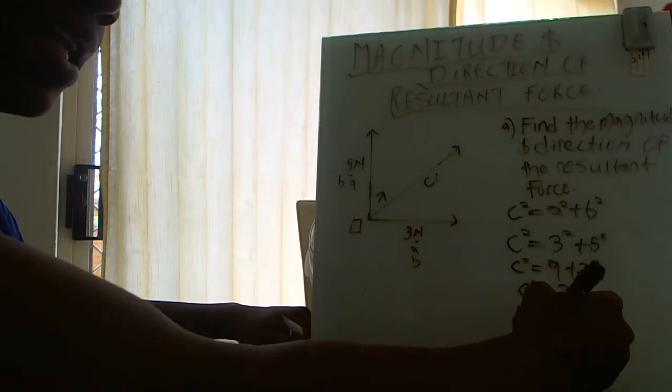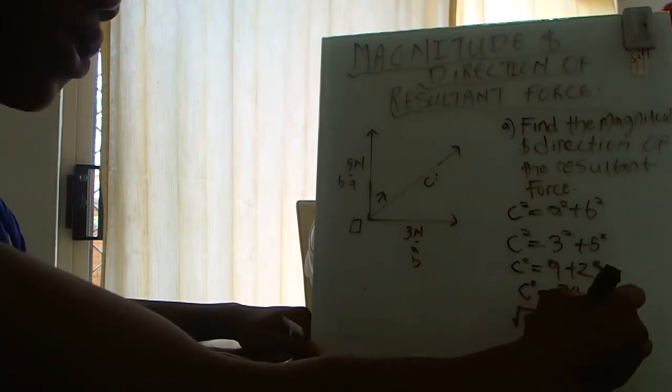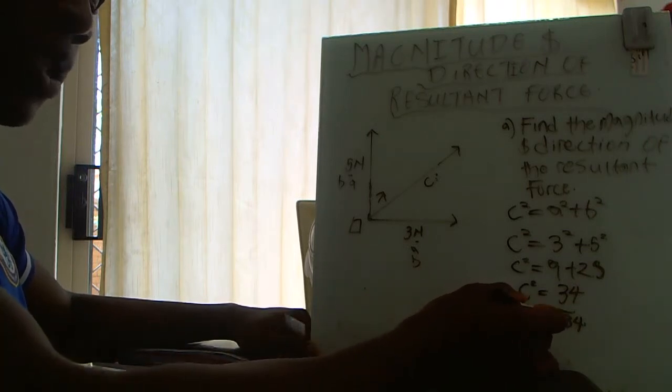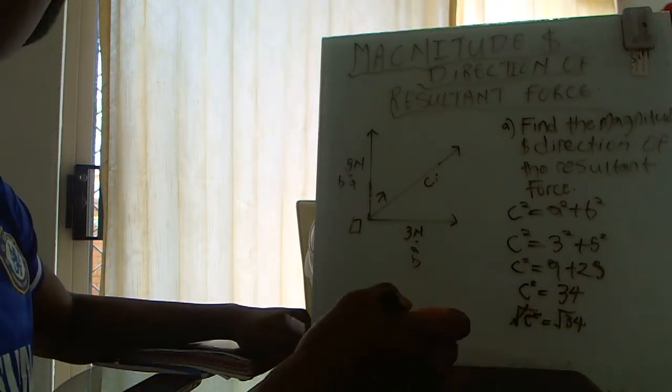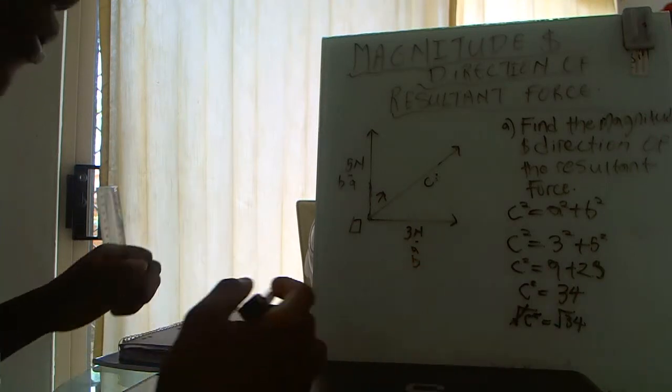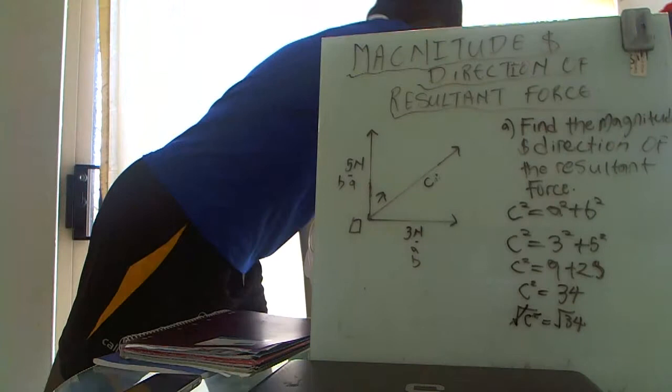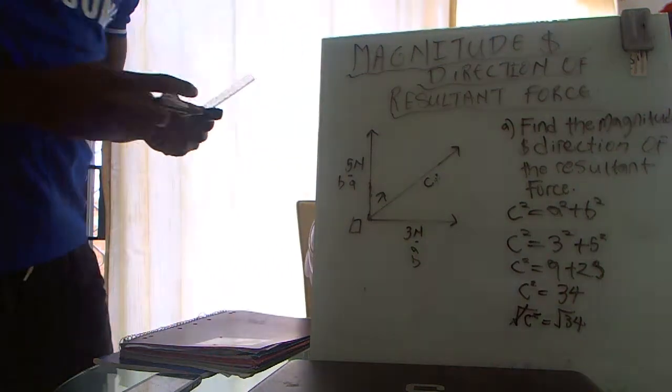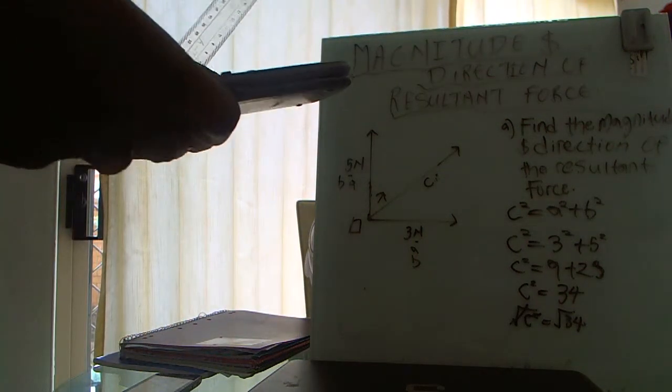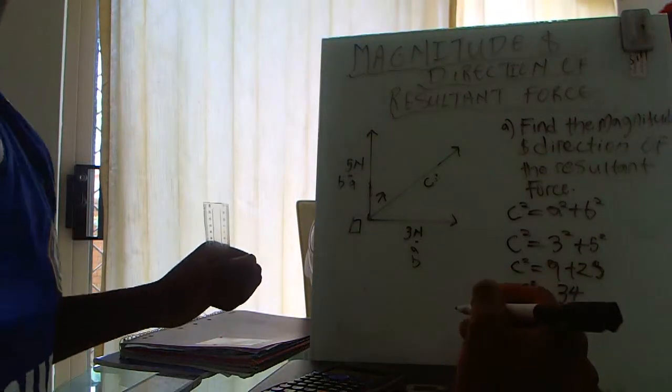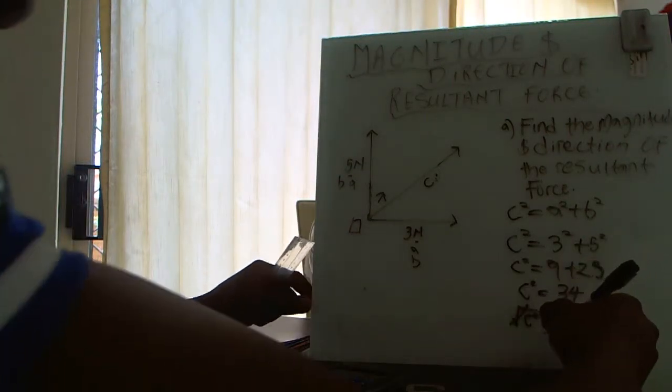When you take the square root of c squared, you have to take the square root of the other side, 34. This square root sign cancels this square, and the square root of 34 is 5.8.